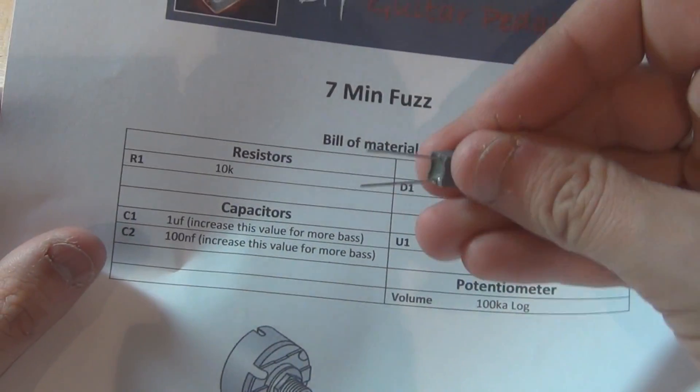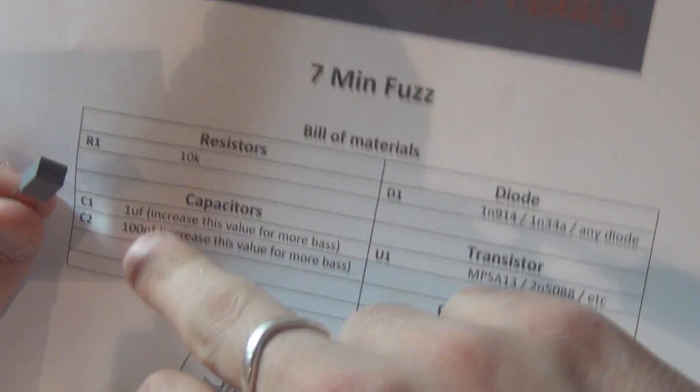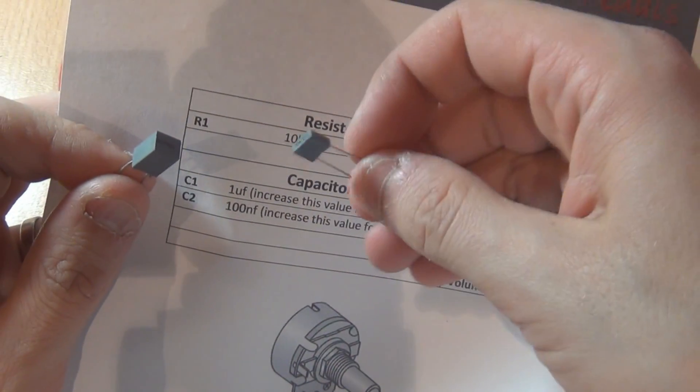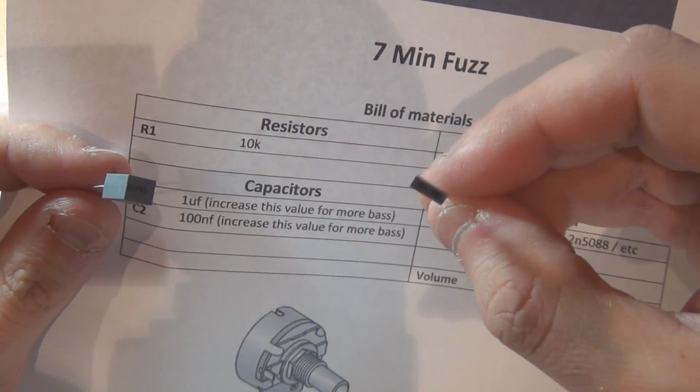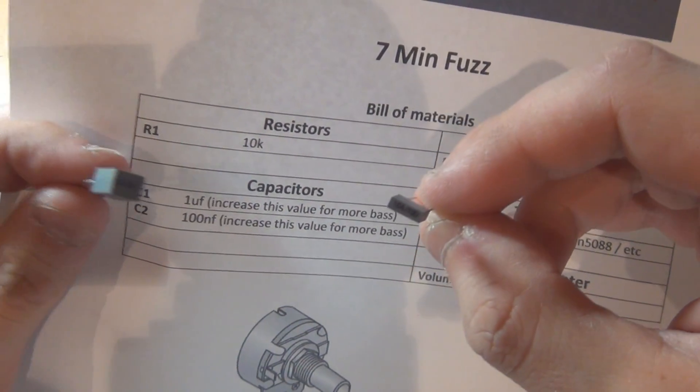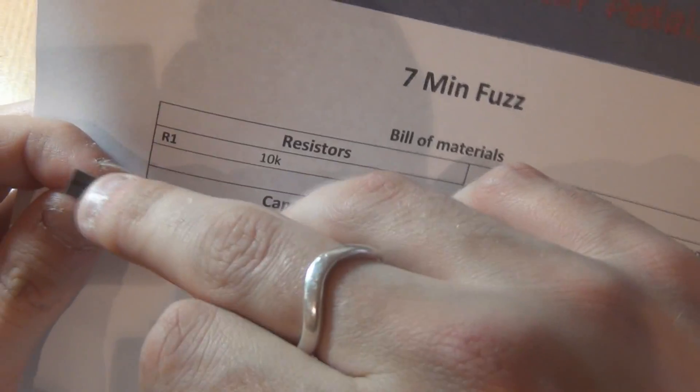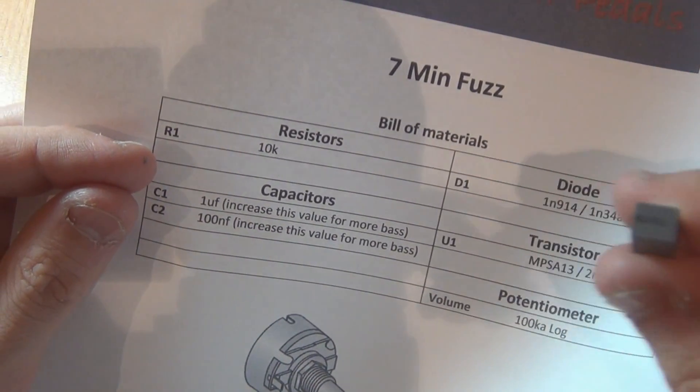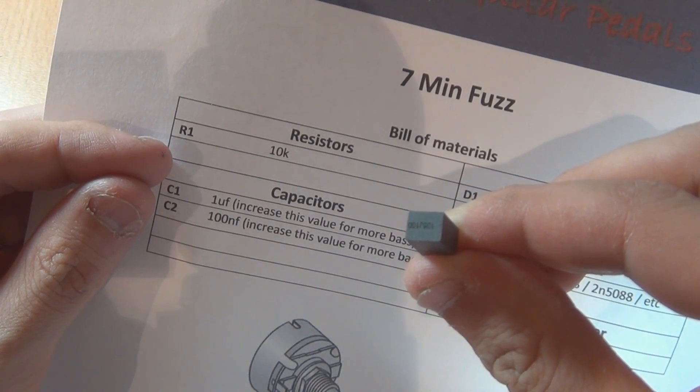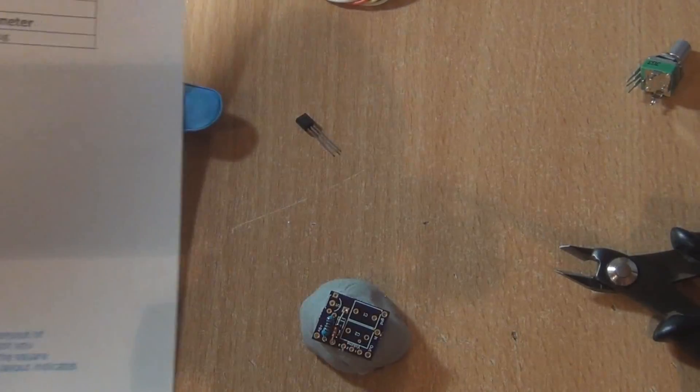So with C1 and C2, they are different, like I said before. You've got two values. The big, fat, square one is the one microfarad and the small one is the 100 nanofarad. And you can actually see the value on the top. 104 is 100 nanofarad and 105 is one microfarad. I'll just see if I can get that on the camera there. Not sure if you can see that, but yeah, it's 105 is one microfarad. So just make sure you put them around the right way.